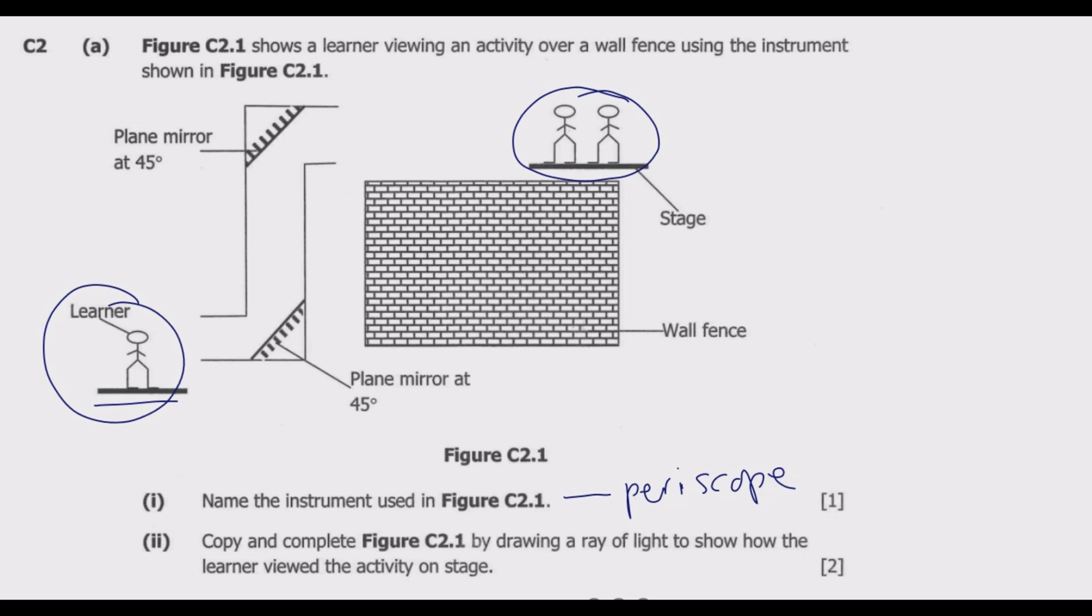The viewer in this case is this learner, and the ray of light will come from where the stage is, then hit the plane mirror. There will be total internal reflection. Remember the second law: the angle of incidence and the angle of reflection will be the same. Then it will be reflected into the observer. What is key is these angles need to show that these reflections are happening.